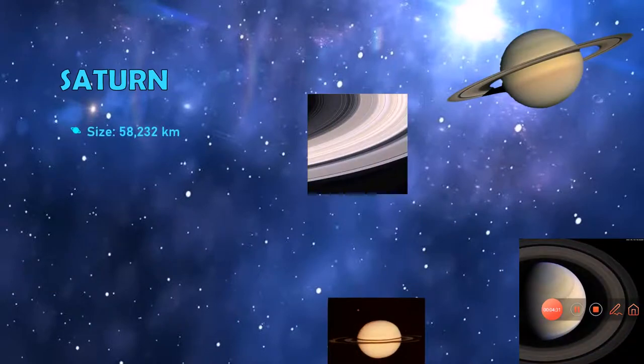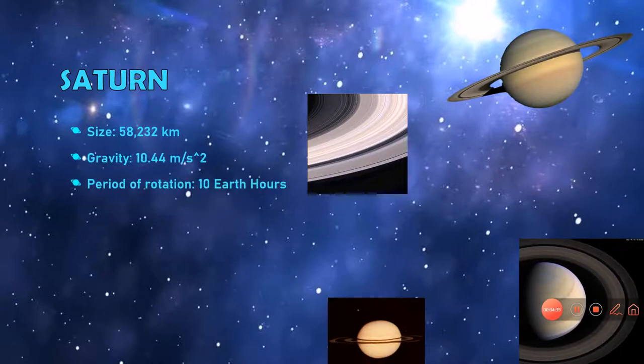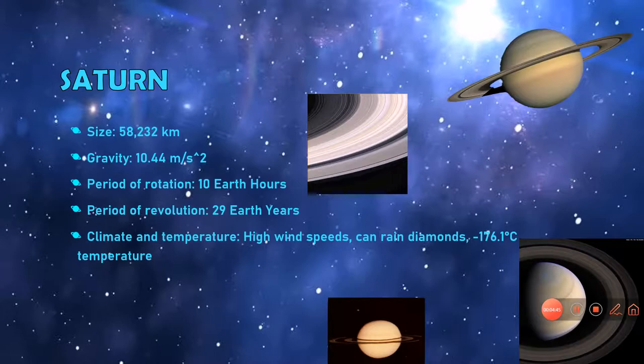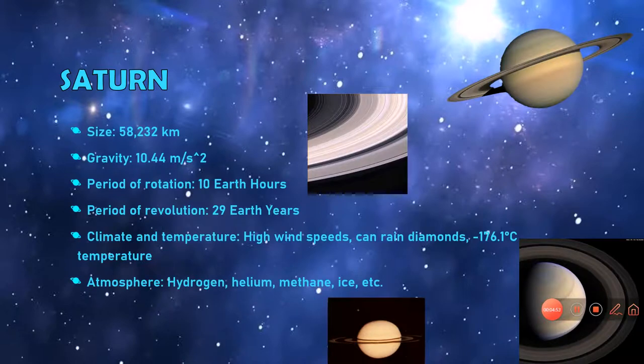Saturn. Saturn also has a whopping 58,232 kilometers. Gravity is 10.44 meters per second squared. The period of rotation is only 10 Earth hours, but the period of revolution is 29 Earth years. Climate and temperature: high wind speeds, raining diamonds, minus 176.1 degrees Celsius temperature. Atmosphere: hydrogen, helium, methane, ice, etc. Has thick rings made of rock and ice.